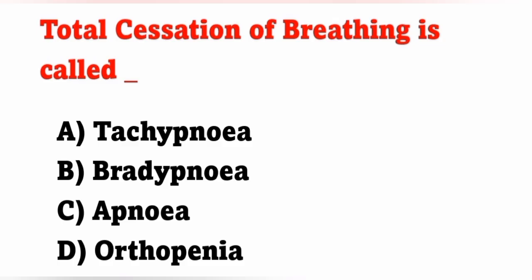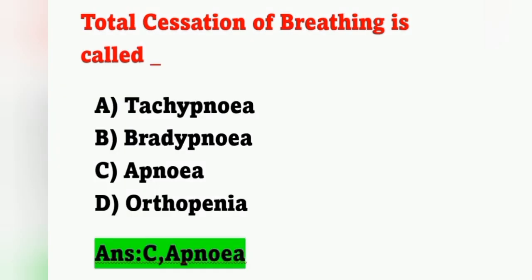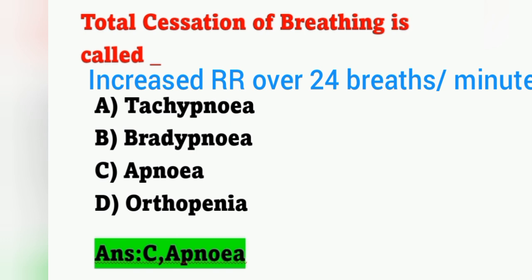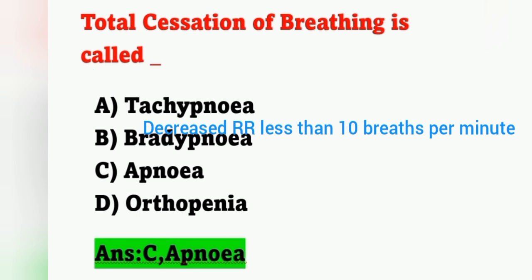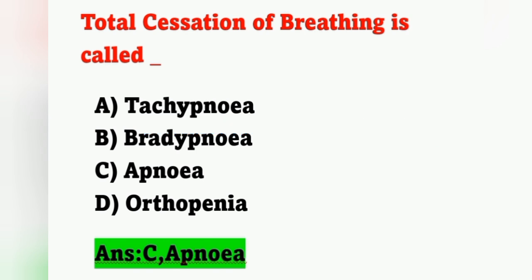Next question: total cessation of breathing is called — options: A) tachypnea, B) bradypnea, C) apnea, D) orthopnea. Total stoppage of breathing is apnea — option C. This is commonly seen in Cheyne-Stokes respiration. Tachypnea means increased respiratory rate over 24 breaths per minute; bradypnea means decreased respiratory rate less than 10 breaths per minute; orthopnea means the patient can breathe only in an upright position.